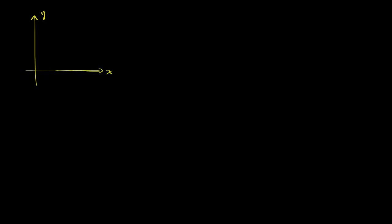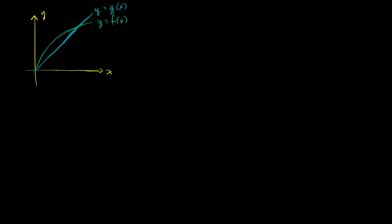Let's now generalize what we did in the last video. So if this is my y-axis and this is my x-axis, let's say I have two functions. So I'm just going to say it in general terms. So let's say one function looks something like this — this is y equals f of x. And then I have another function, y equals g of x. And like we did in the last video, I want to think about the volume of the solid of revolution we get if we rotate the area between these two around the x-axis.